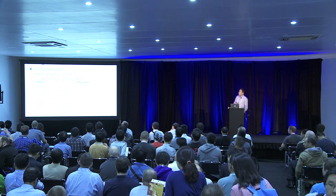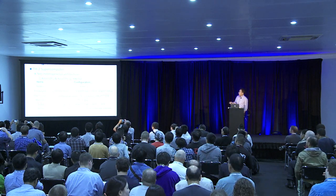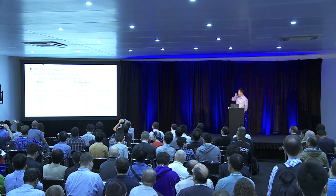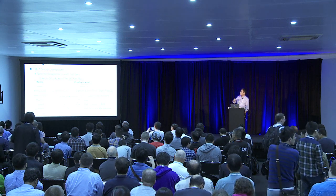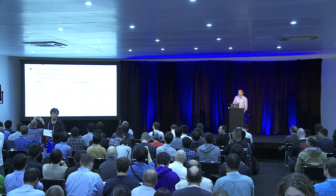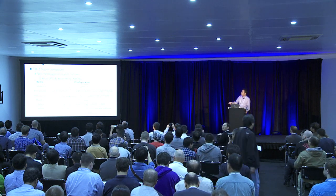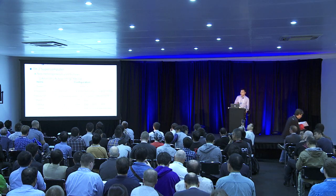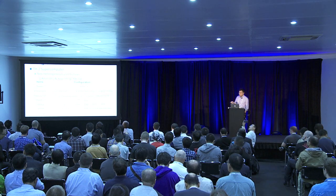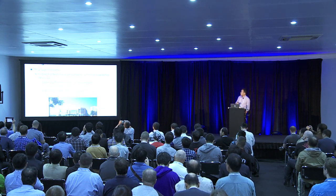Currently, the TH-2 supercomputer has a novel heterogeneous architecture because we use Intel Xeon CPUs, Intel Phi coprocessors, and accelerator units with the ISA. It has 16,000 nodes for HPC and is installed at the National Supercomputing Center in Guangzhou.